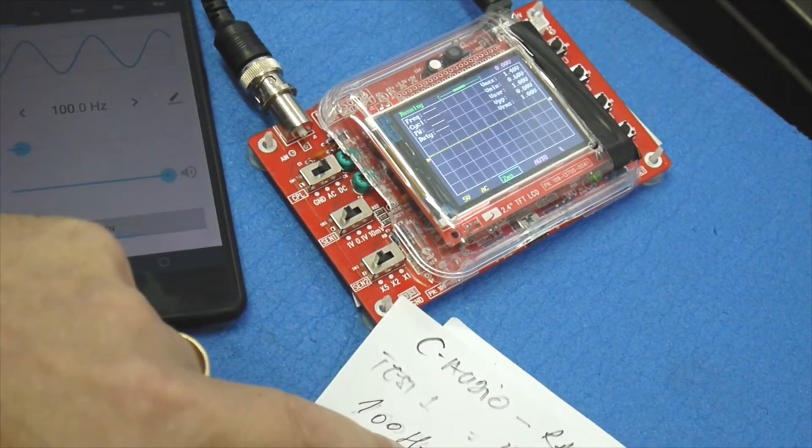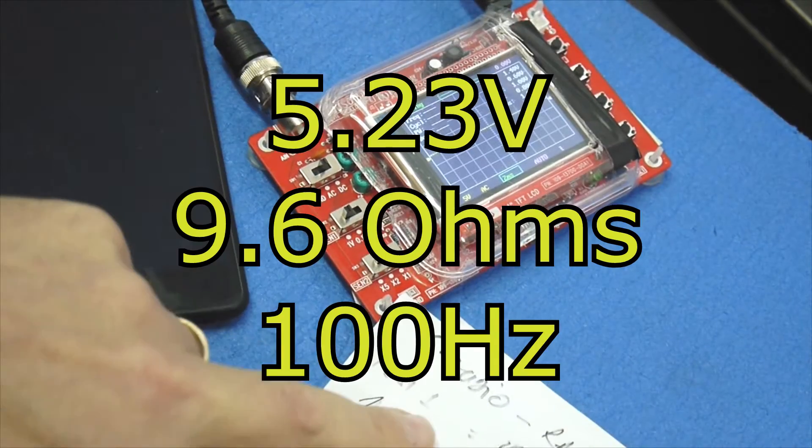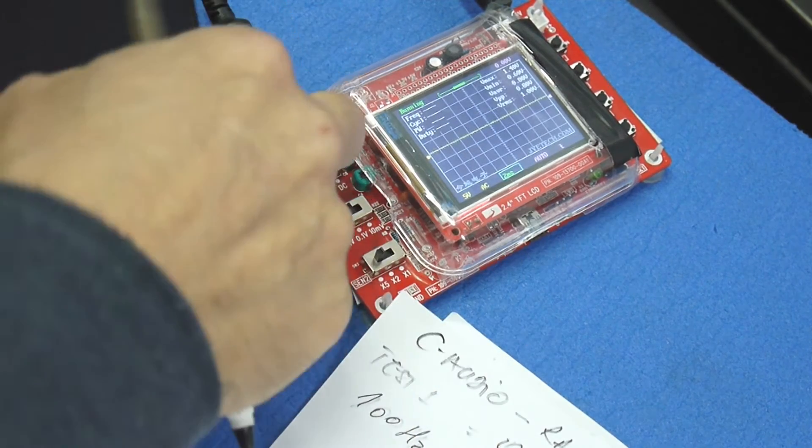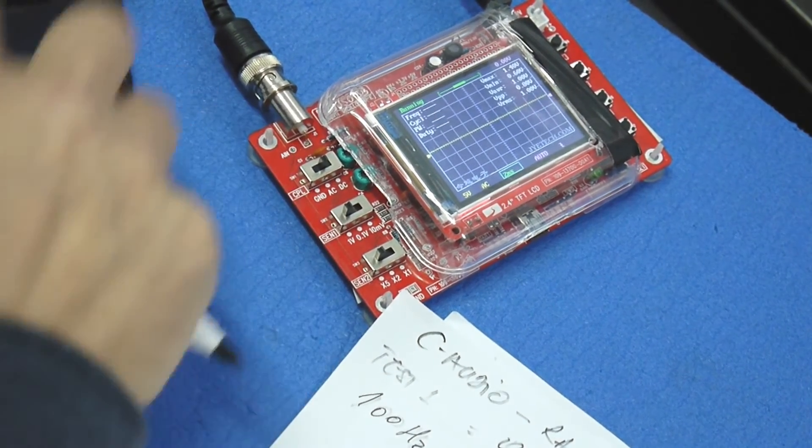We got RMS 5.23 volts on 9.6 ohms. That's for 100 hertz. Now let me see 1000.